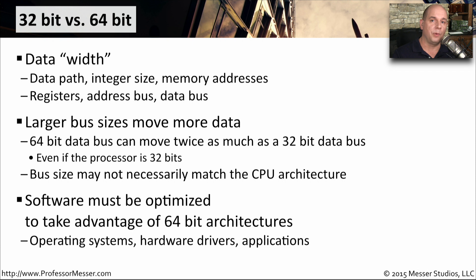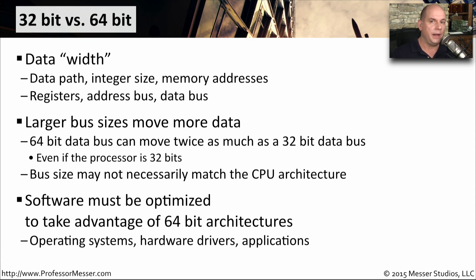If you are running an operating system that can take advantage of a 64-bit CPU, then every aspect of that operating system needs to be optimized for that 64-bit platform. Your operating system needs to be a 64-bit OS. The drivers you're using to connect to your hardware need to be 64-bit hardware drivers, and the applications running on your operating system need to be written for a 64-bit OS.